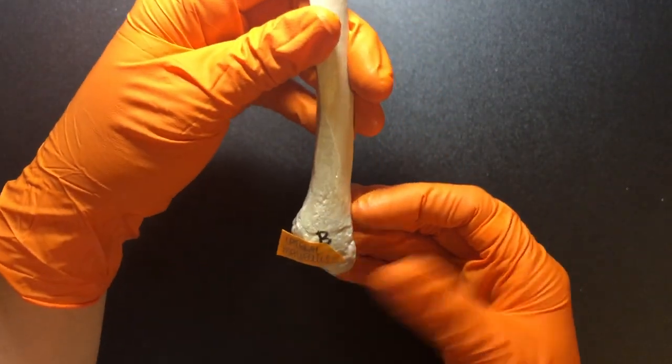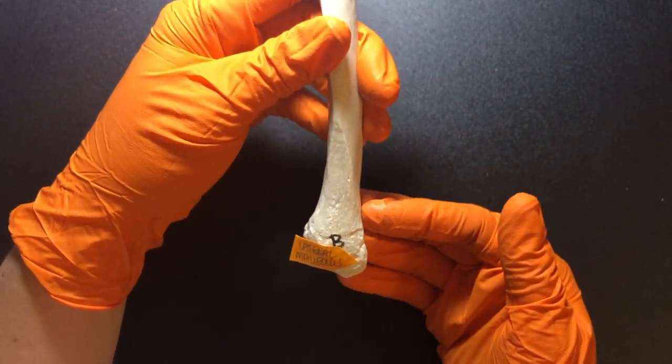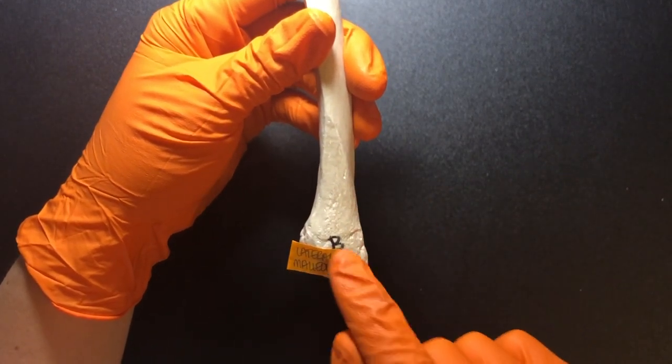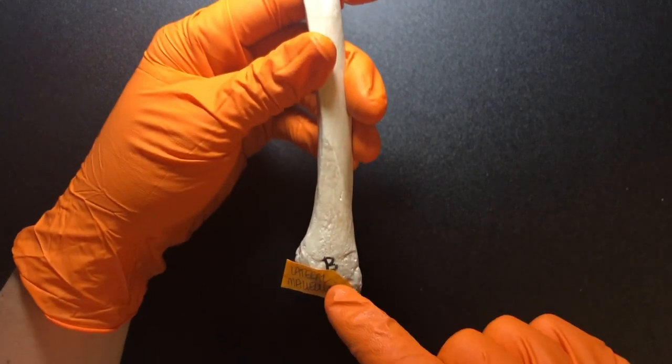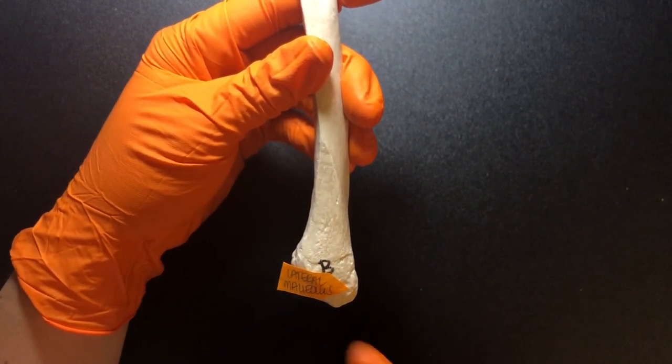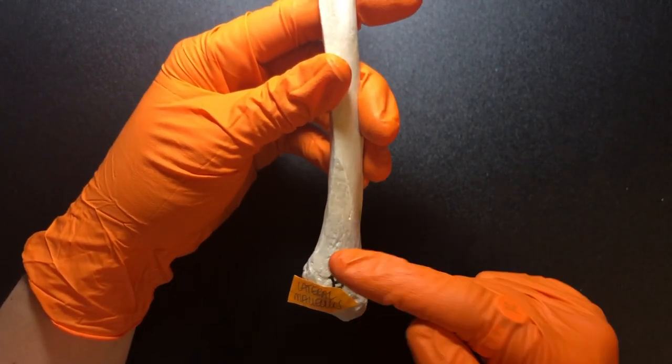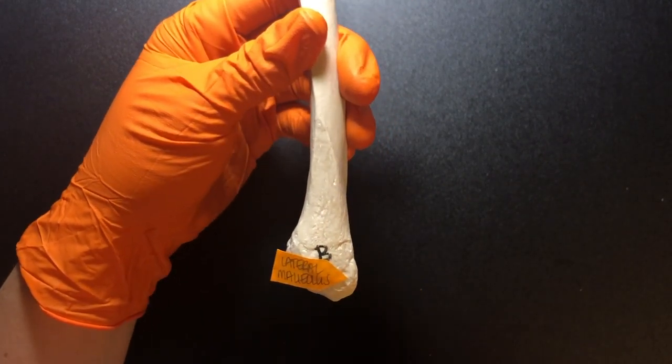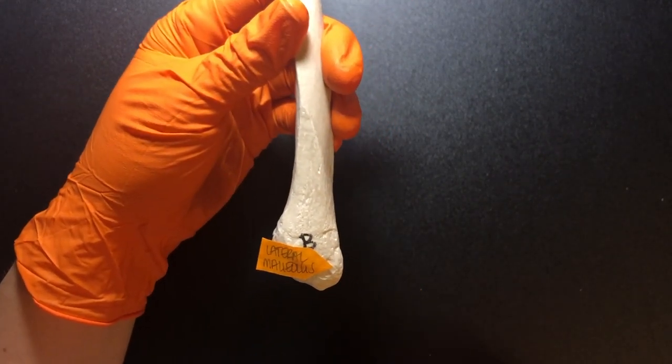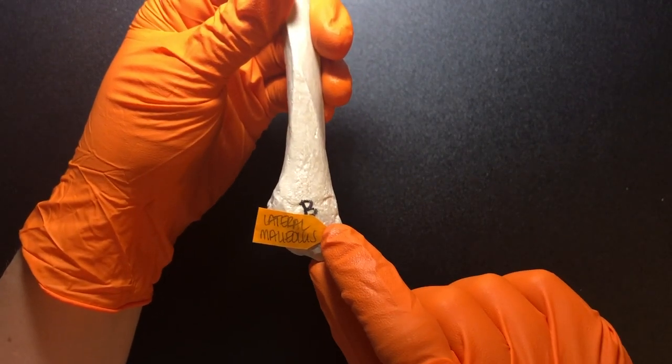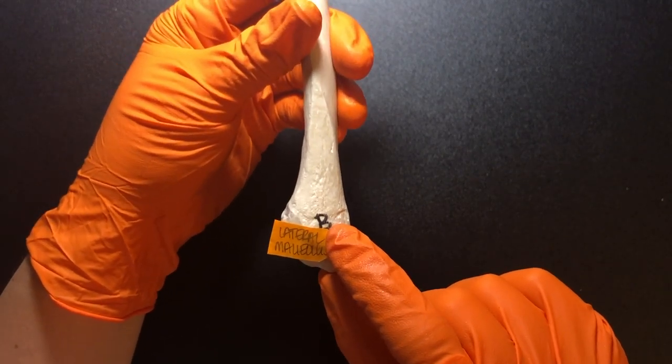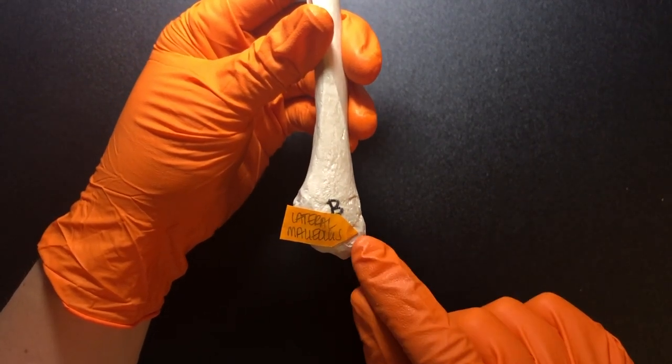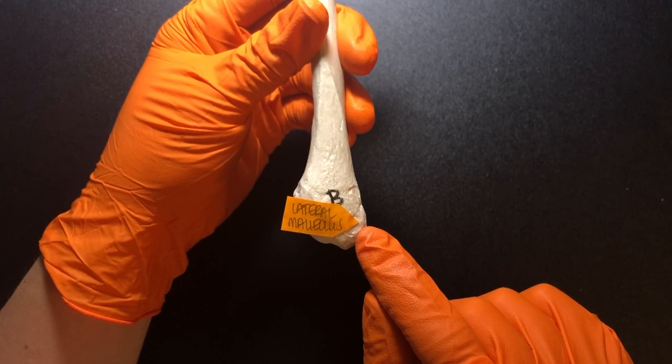And this is the left fibula. A way that I kind of remember is that the triangle kind of, when you're looking at the anterior side, it points to what side? So this is anterior. So then this is pointing to the left side. So this is the left fibula. So go ahead and palpate that lateral little knobby structure by your ankle. What you're feeling is the distal end of your fibula.